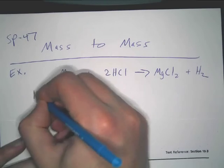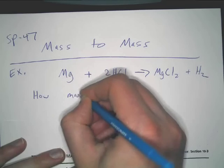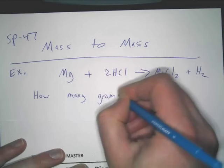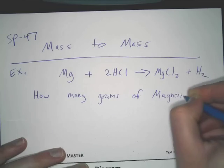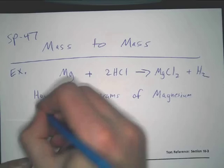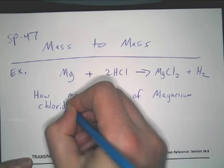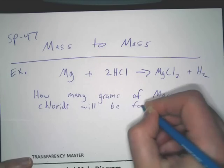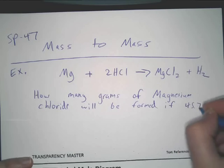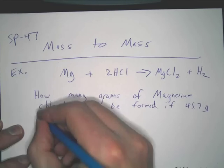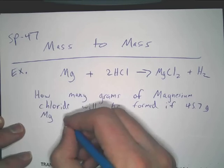Okay, this is how a simple question will be asked. How many grams of magnesium chloride will be formed if 45.7 grams magnesium reacts with excess HCl?